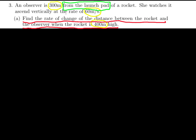She watches it ascend vertically at a rate — this is a calculus expression. Rate is a derivative, and ascending means it's a positive derivative. And we want to find the rate of change of the distance between the rocket and the observer — so that's another derivative. We could say we don't care that she's watching it; everything else seems fairly important.